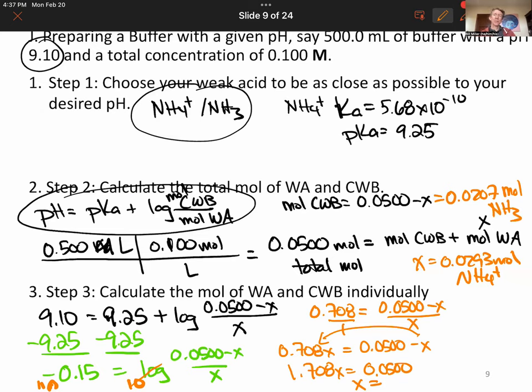And so with this, what I want to impress upon you is that you can design a buffer to be at the pH that you want. You always want to choose a buffer, meaning a weak acid, in which the pKa is within one unit and really as close as possible to the desired pH, so that your buffer will be able to withstand strong acid and strong base attacks. And that's how you design a buffer.